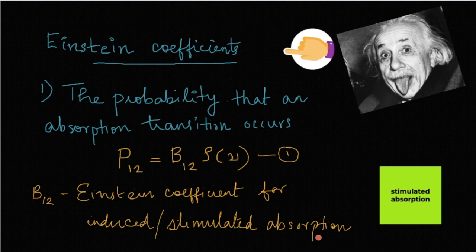B12 is a constant characteristic of the atom and represents the properties of the energy states E1 and E2.